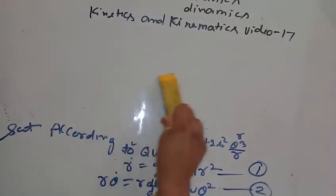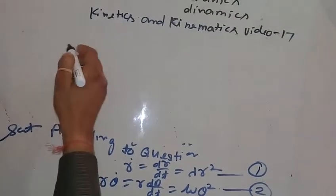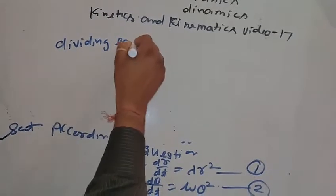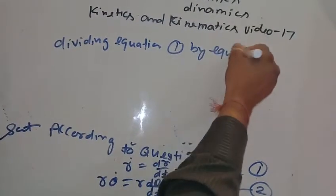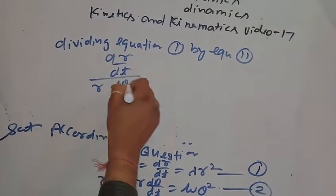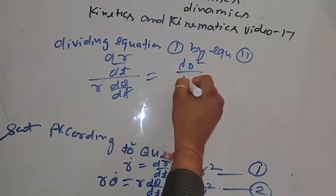We are given these two equations. Now dividing equation first by equation second, we get dr/dt divided by r d theta/dt equals lambda r squared upon mu theta squared.